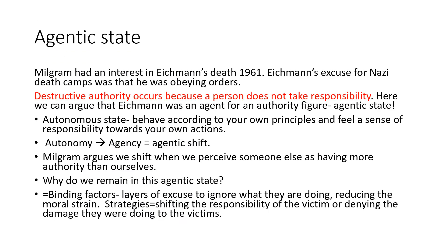So we have a bit more on agentic state now, and this is your AO1 marks. Milgram had an interest in Eichmann's trial in 1961. Eichmann was the leader of a Nazi death camp and his excuse for killing Jews was that he was obeying orders. Destructive authority occurs because a person does not take responsibility. We can argue that Eichmann was an agent for an authority figure and so was in this agentic state. Milgram argues that we shift from autonomy to agency when we perceive someone else as having more authority than ourselves.